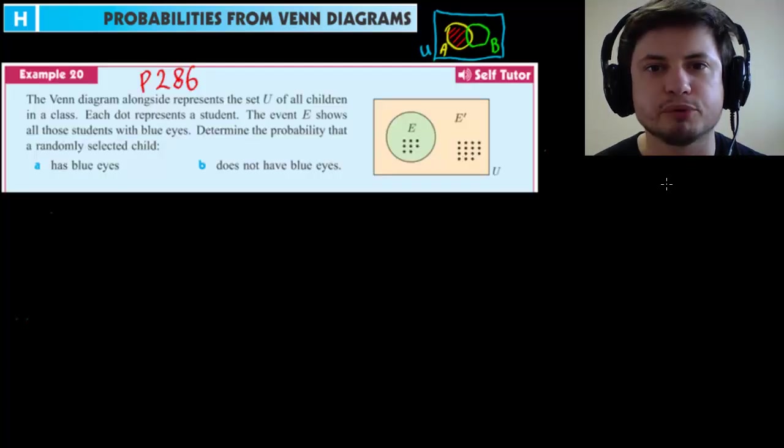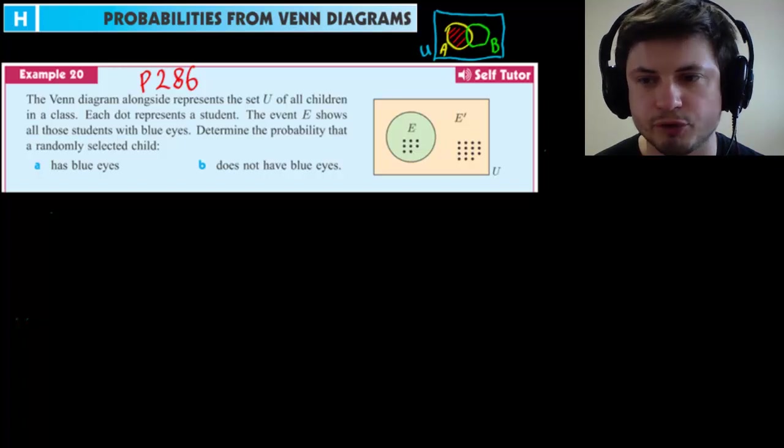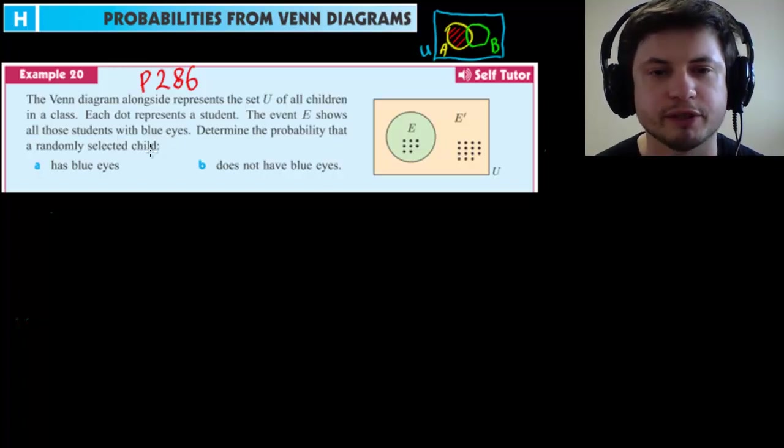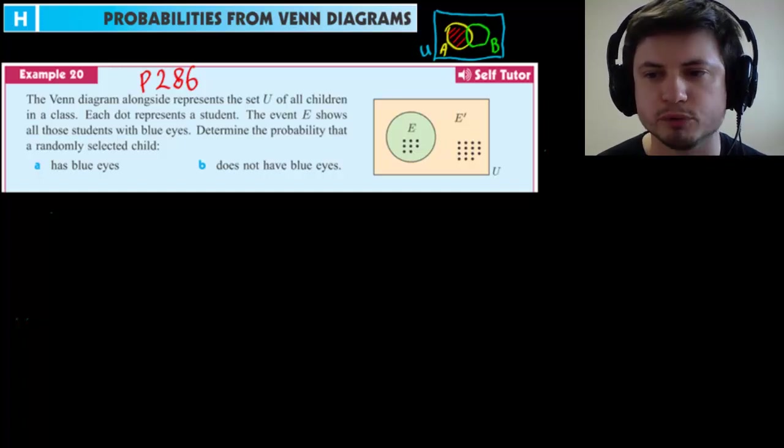Let's take a look at example 20, from page 286. The Venn diagram alongside represents the set U of all children in a class. Each dot represents a student. The event E shows all those students with blue eyes. Determine the probability that a randomly selected child has blue eyes or does not have blue eyes. It's a pretty simple question.